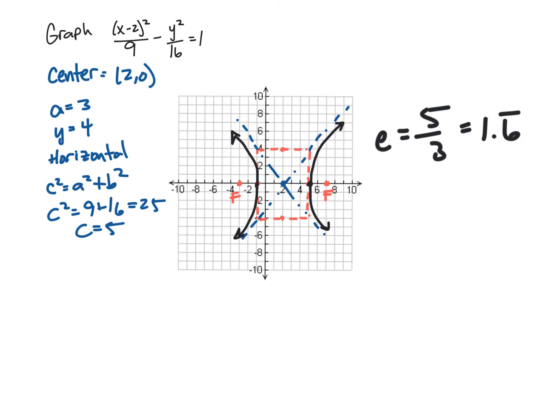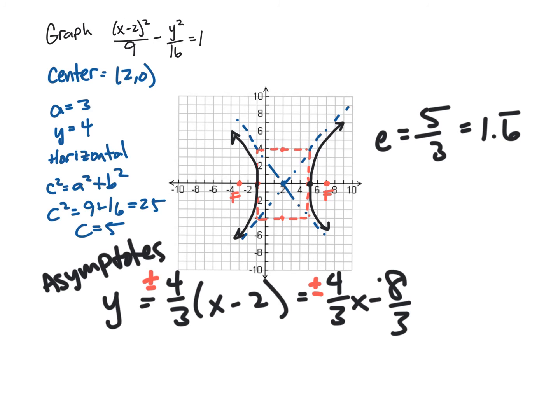And finally, the asymptotes. And again, I'm just going to use it just like point-slope formula. The center for the y was 0, so it's just y =. The slope was I went up 4 and to the right 3. So that's 4/3 times (x - 2), which comes out to (4/3)x - 8/3. And then just don't forget that these are both plus and minus because the asymptotes are going in both directions. All right. And that's how we graph hyperbolas given standard form.